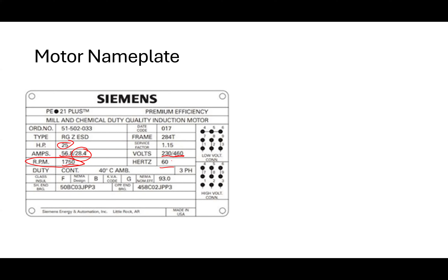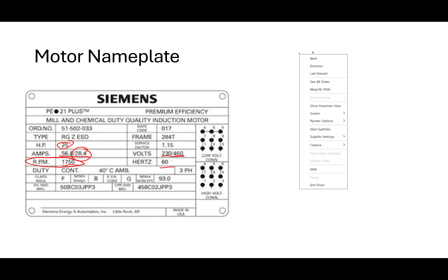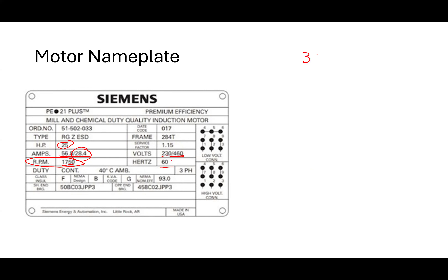1750 RPM is an odd number. In the synchronous machine, we said 60 hertz corresponds to 3600 RPM. If I go half of that speed, it would be 1800 RPM. That's close to 1750, but not exactly 1750. There's a relationship between this value 1800 and this value 1750 which we need to investigate.